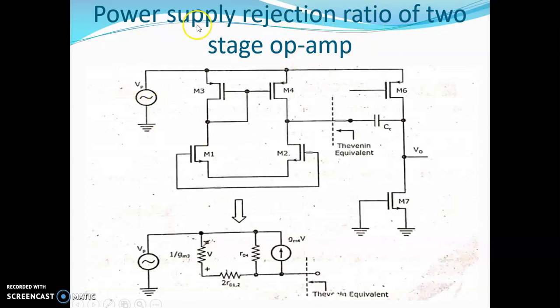The PSRR, or power supply rejection ratio, is classified into 2 types. You can note down those points. Namely, positive power supply rejection ratio and negative power supply rejection ratio. The main purpose of PSRR is to attenuate any disturbances that are occurring in this op-amp, and it can be of 2 types: positive and negative.